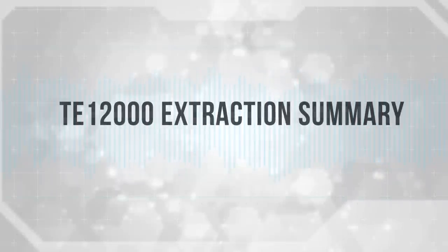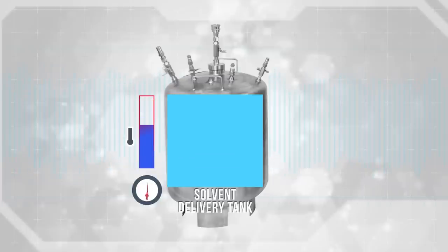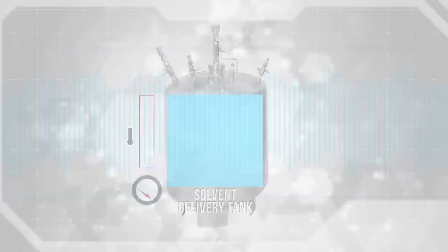Timisium TE-12000 Extraction System. The process begins with a pressure checked full solvent delivery tank. The solvent has been placed in the tank and pre-chilled or heated to the desired starting temperature, or the solvent delivery tank has just recovered solvent from a prior run and should be cold to start. For volatile extractions, we recommend normal butane that has been cleaned by distillation using the Timisium Extractor.